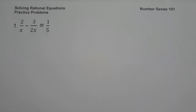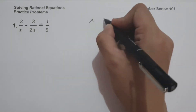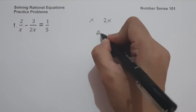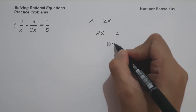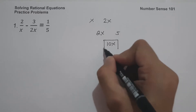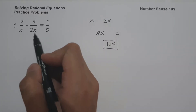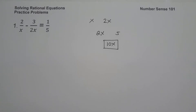The first step is to eliminate the denominators by multiplying each term of the equation by the least common multiple or least common denominator. The LCM of x and 2x is 2x, and the LCM of 2x and 5 is 10x. So that's how you find the LCM of x, 2x, and 5. If you find any difficulty finding the LCM, just multiply all the denominators.